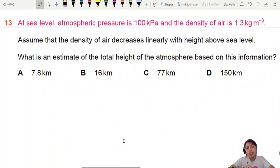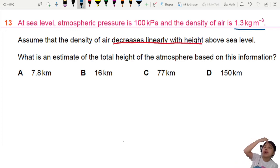At sea level, atmospheric pressure is 100 kPa and the density of air is 1.3 kg per meter cubed. Assume that the density of air decreases linearly with height. This is important - decreases linearly with height. That will be a clue later. Above sea level, what's the estimate of the total height of atmosphere based on this information?